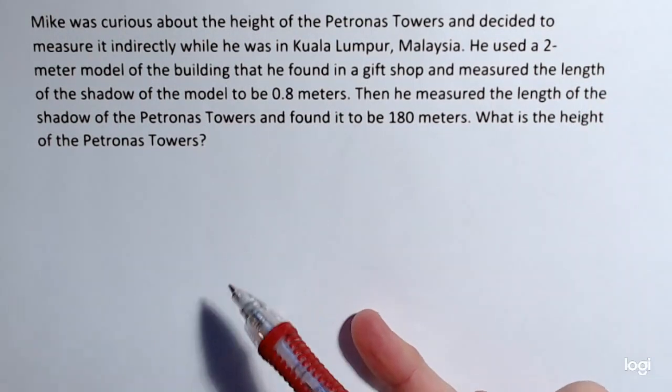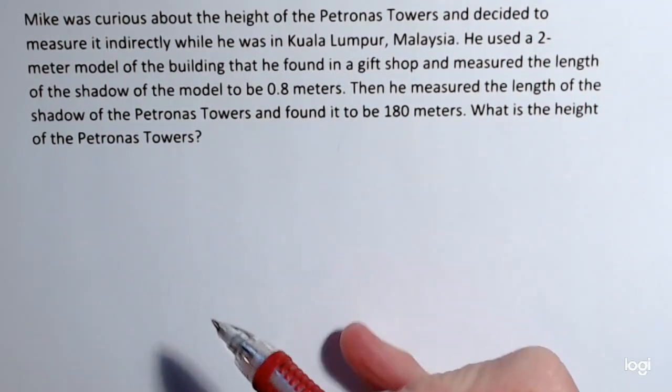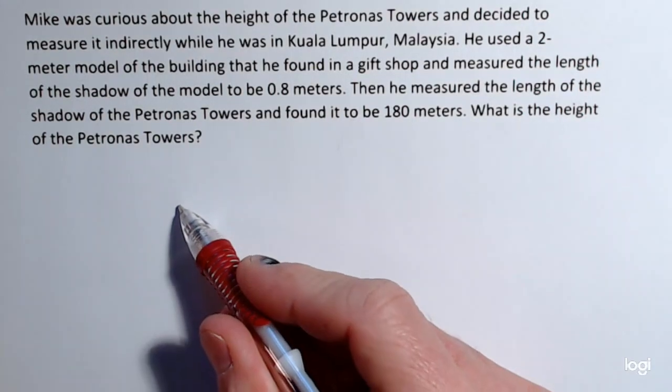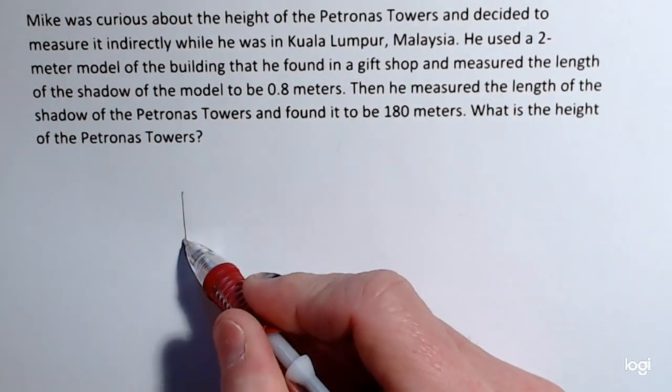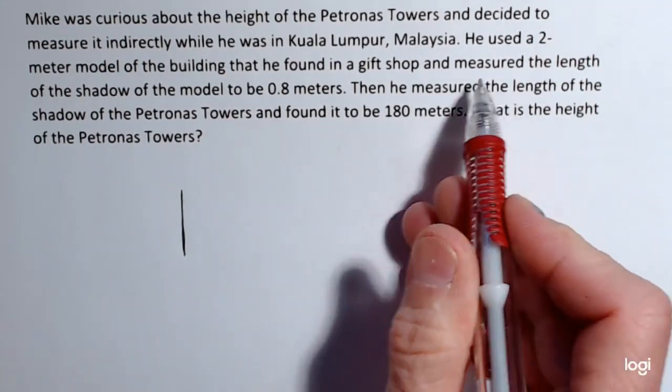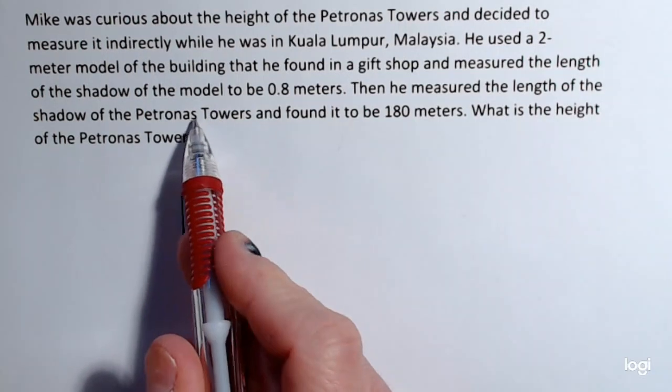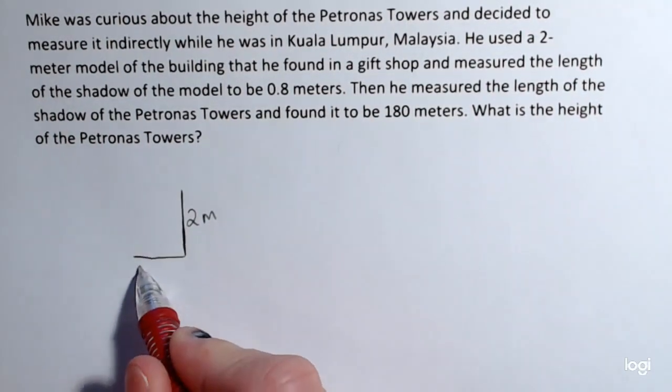So first thing I want to do is I want to draw a triangle that represents the small tower from the gift shop. So he bought a toy tower and that was 2 meters tall and it cast a shadow of 0.8 meters.